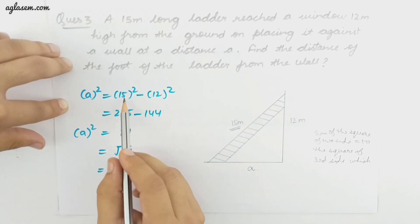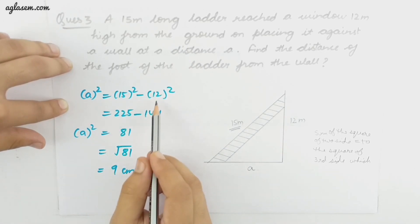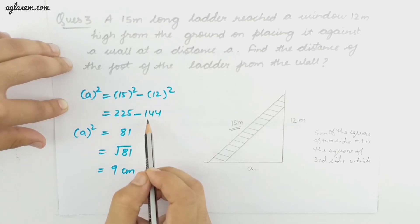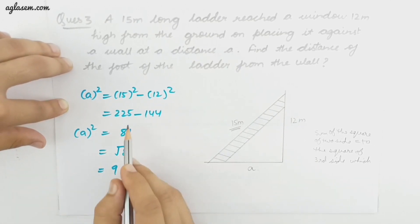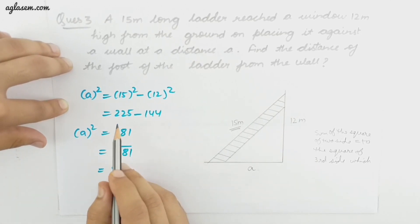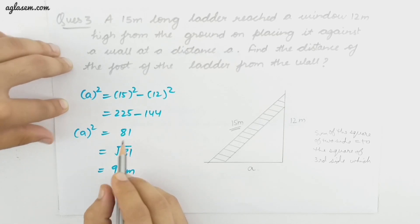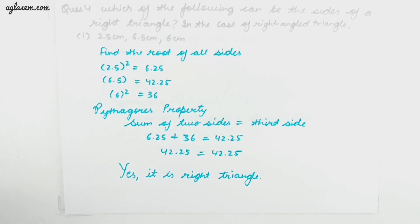The square of 15 is 225 and the square of 12 is 144. A square equals 225 minus 144 which gives 81, and 81 is the square of 9. So A equals 9 meters. Let us move to question number 4.